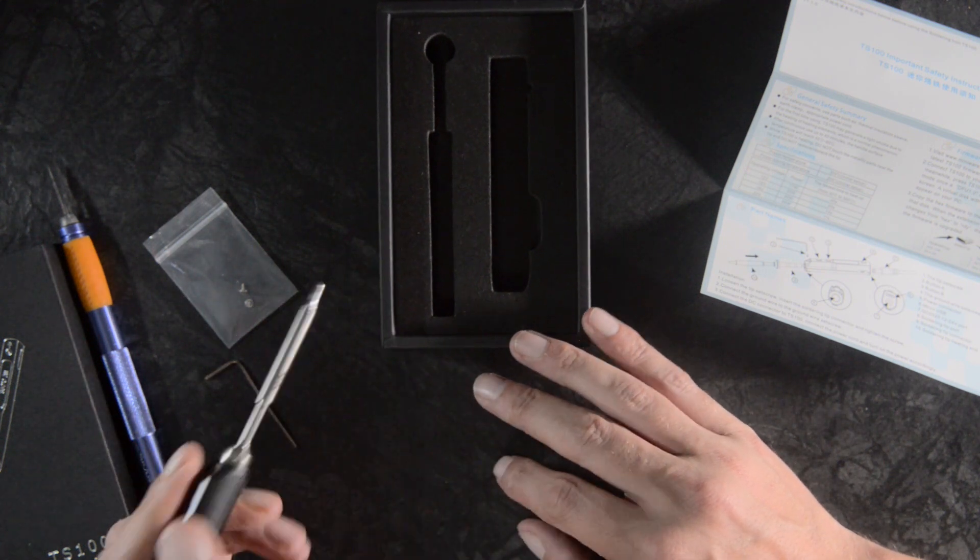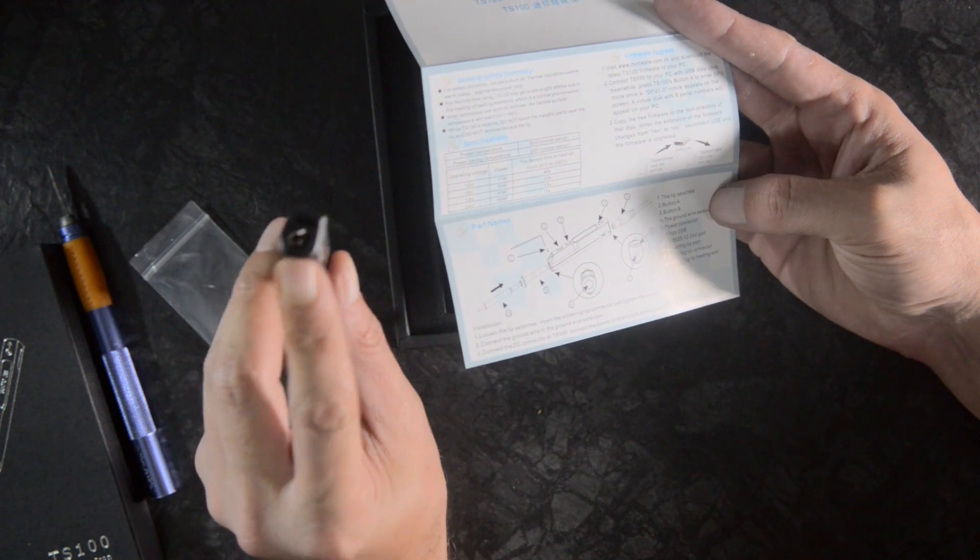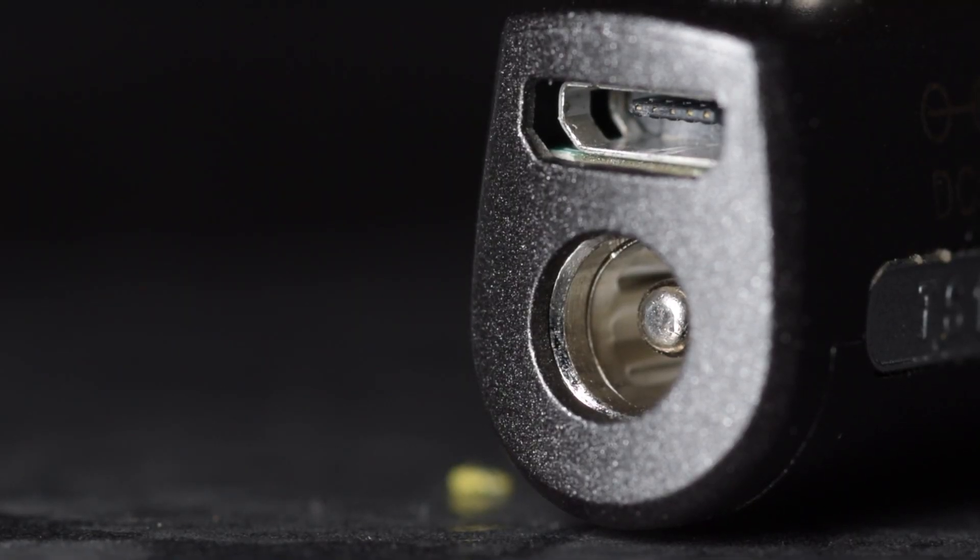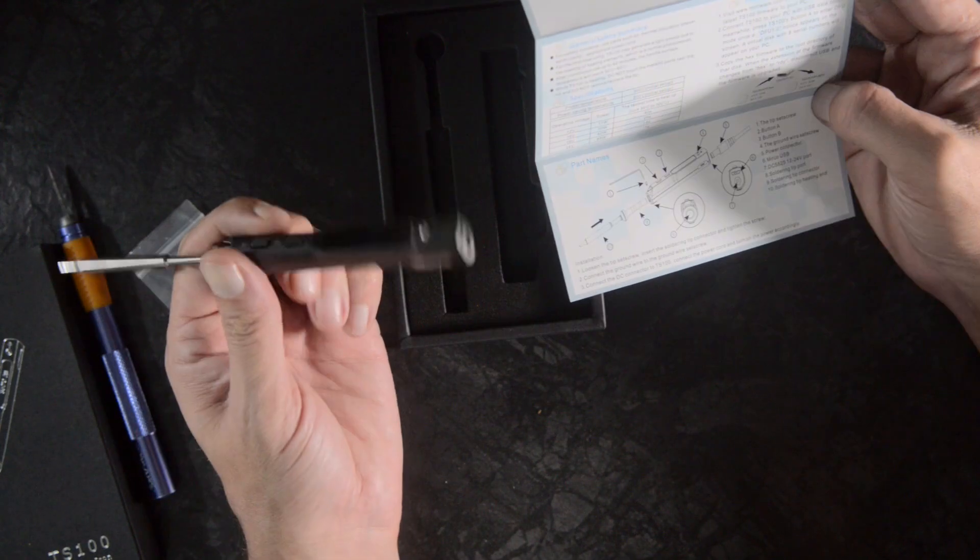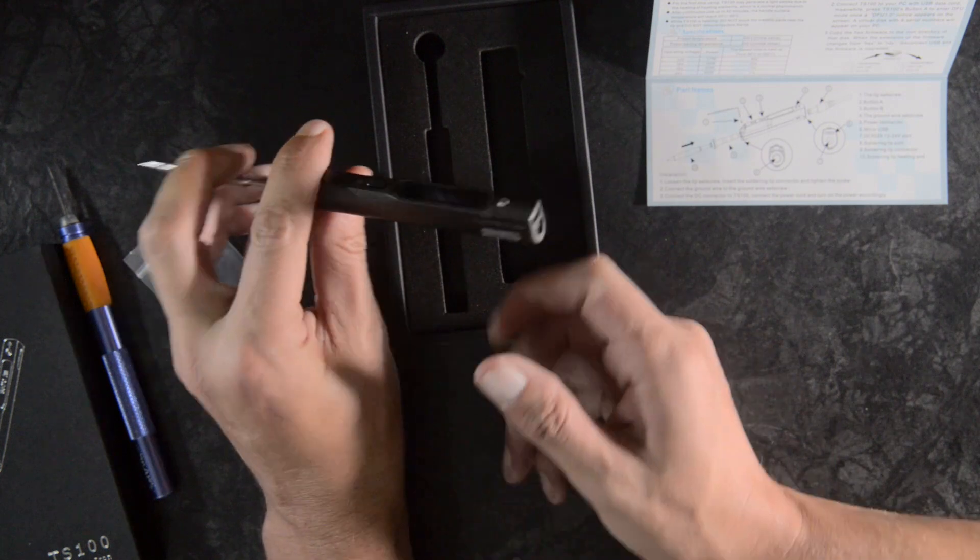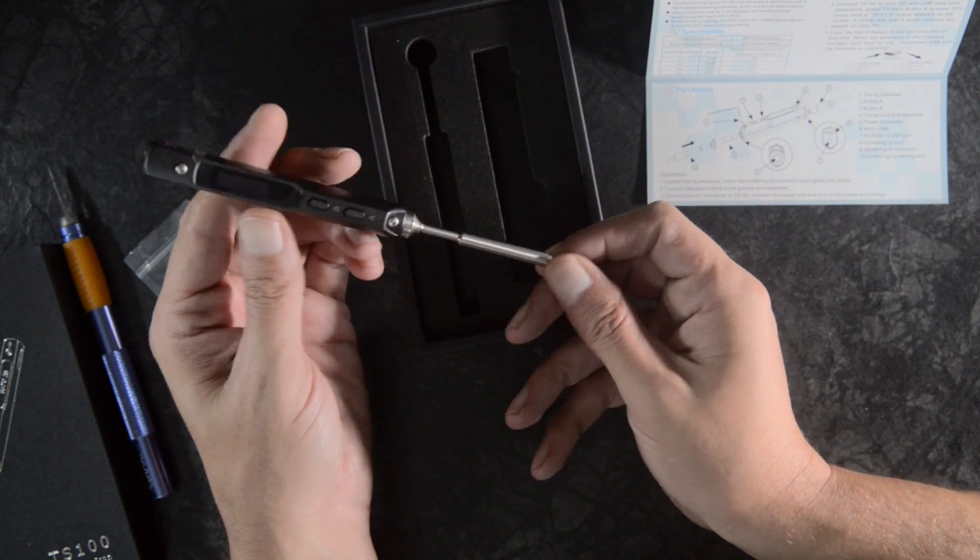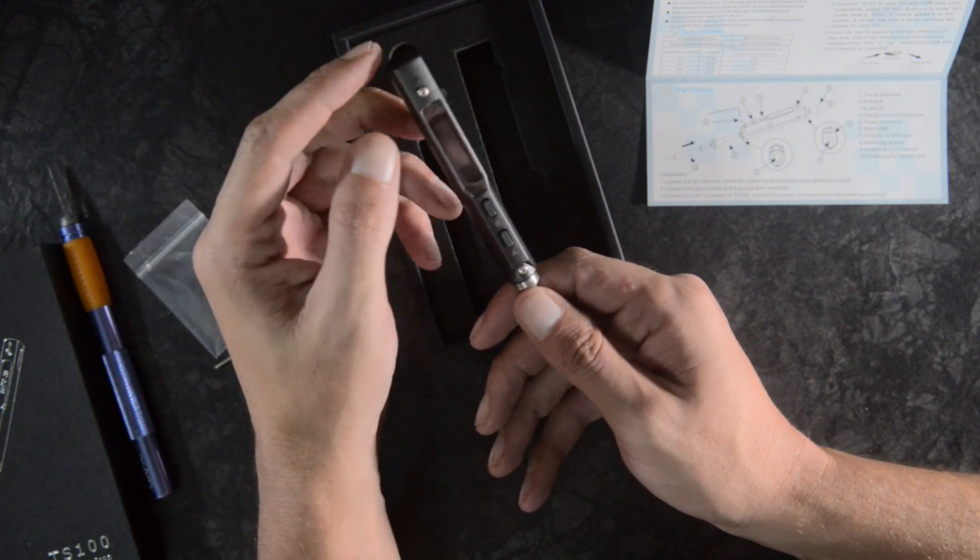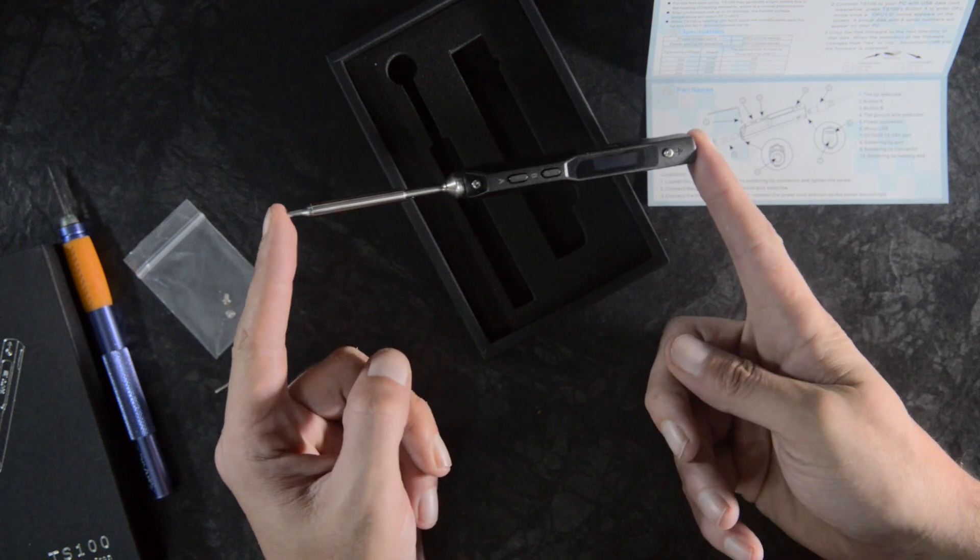It has on one end a DC jack and it has a micro USB socket for updating the firmware and connecting it to your PC. But it runs on 12 to 24 volts, and at 24 volts it gets 65 watts of power, which means that unlike my old soldering iron where I have to turn it on five minutes before I want to use it, this one I can turn it on and 11 seconds later it's at 300 degrees.